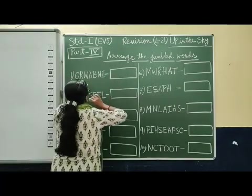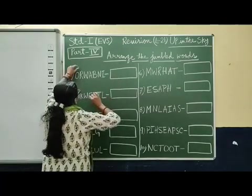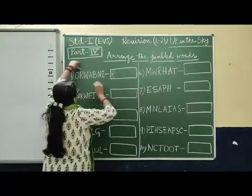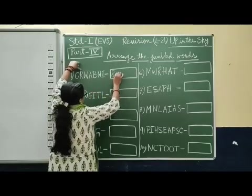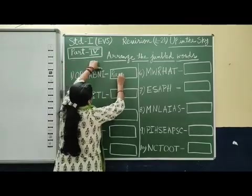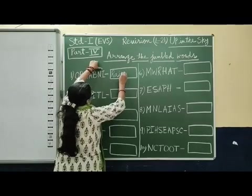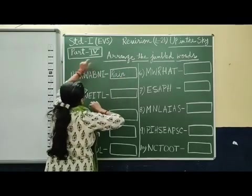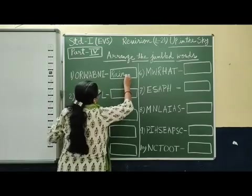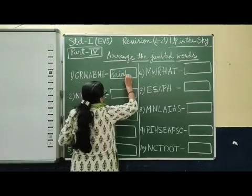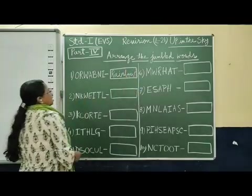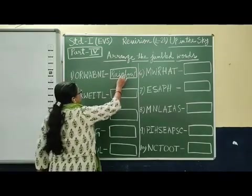So we will arrange it. See here: R, A, I, N — Rain — then B, O, W — Rainbow. Isn't it? Rainbow: R, A, I, N, B, O, W — Rainbow.